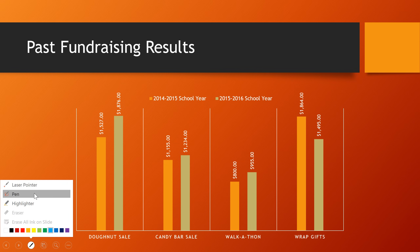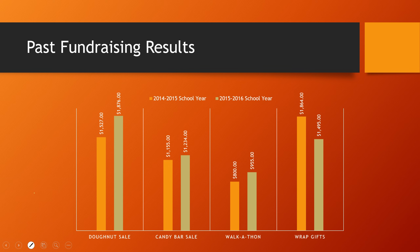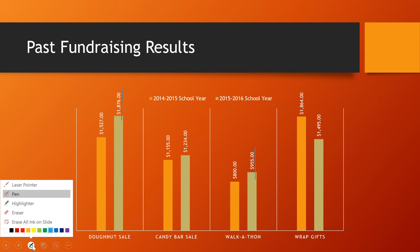First, select the tool you want, then click and drag to draw anywhere on the screen. This makes it easy to point out the most successful fundraiser, for example, and also the least successful. Drawing with your mouse can be a little tricky, so you might want to try the feature out before you use it in front of an audience. To erase any markings, open the menu again and choose one of these options.